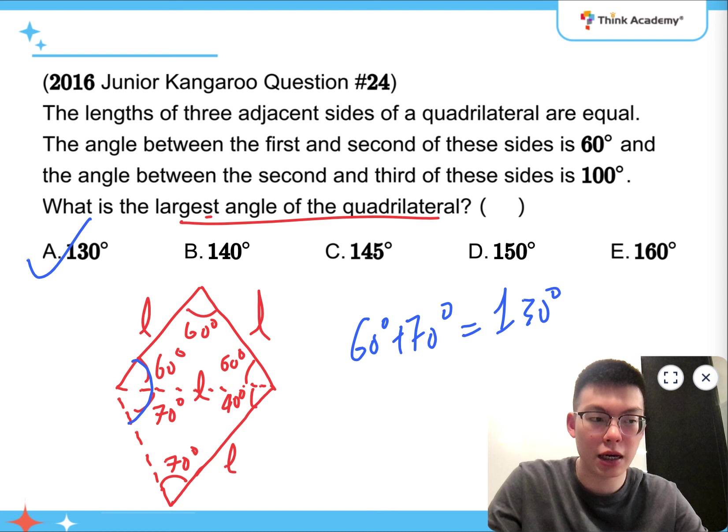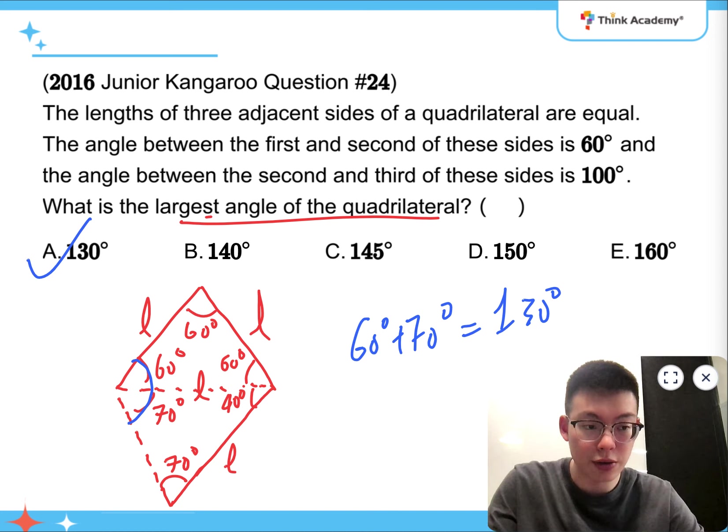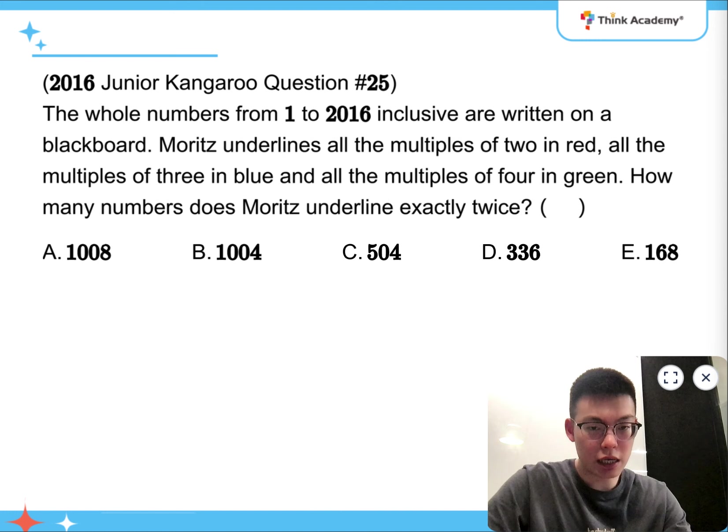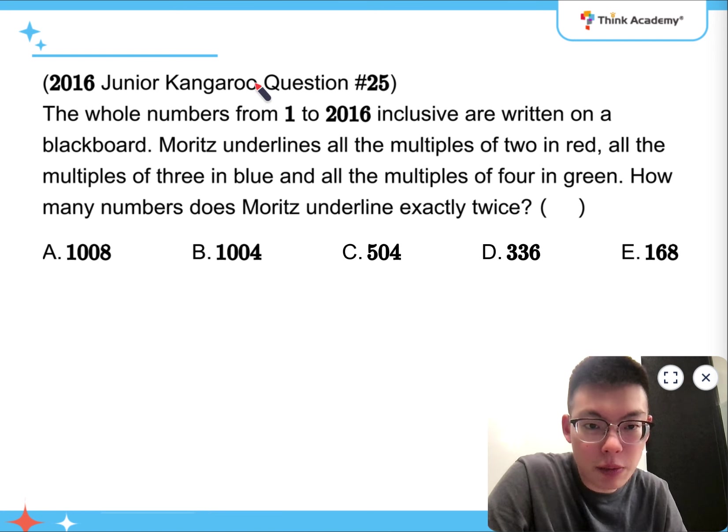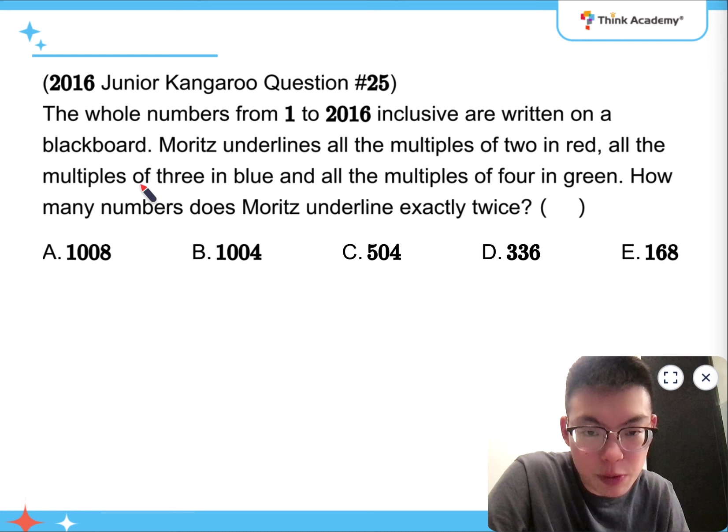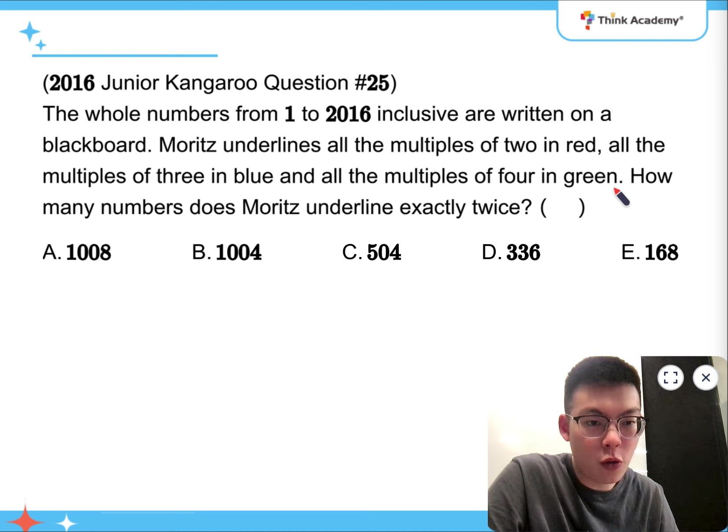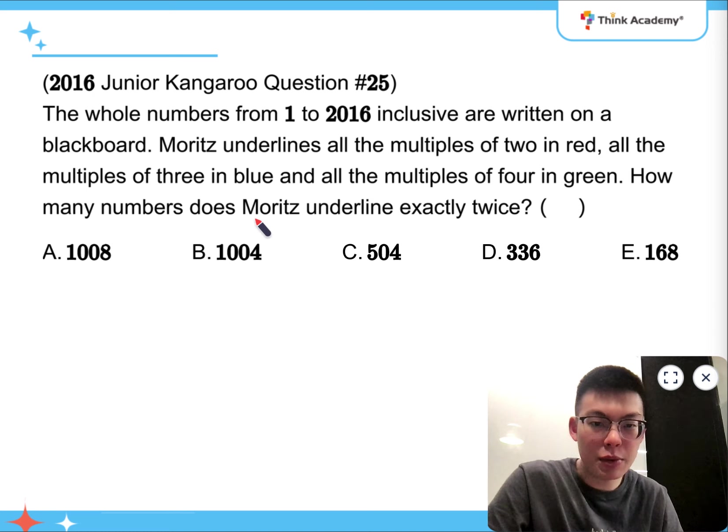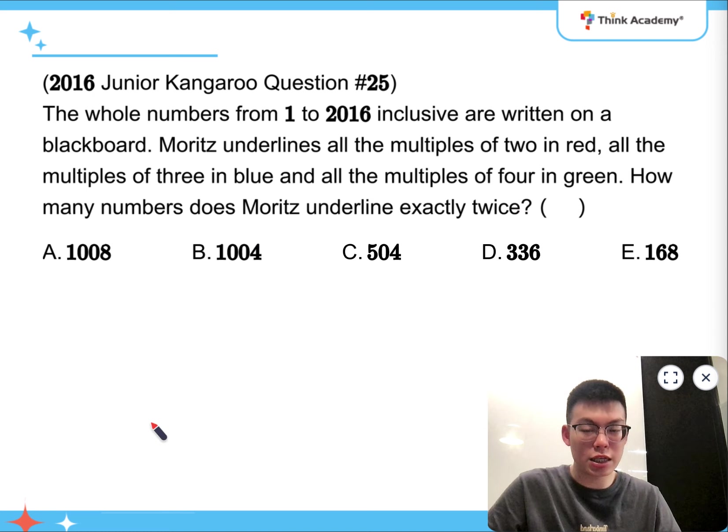So, this one might be slightly harder, because you need to imagine what's going on there. So, the last question is question number 25. It says that the whole numbers from 1 to 2016 are written on a blackboard. Morris underlines all the multiples of 2 in red, all the multiples of 3 in blue, and all the multiples of 4 in green. So, how many numbers does Morris underline exactly twice?